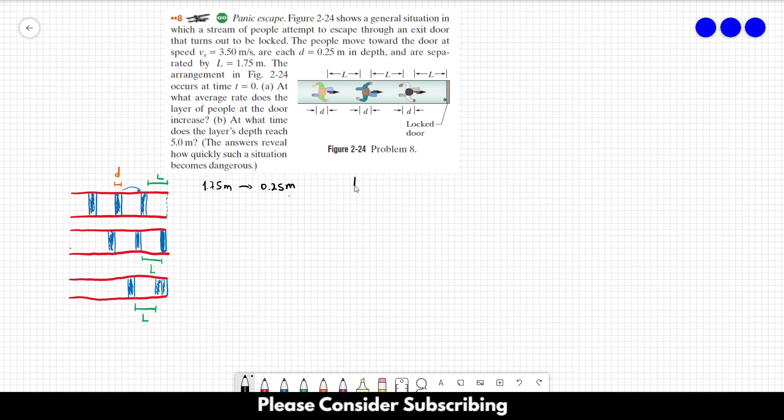So the rate of increase would be 0.25 meters divided by the time a person takes to run 1.75 meters. Let's call it D divided by delta T. We need to find the time it takes for one person to run 1.75 meters. This would be delta T.